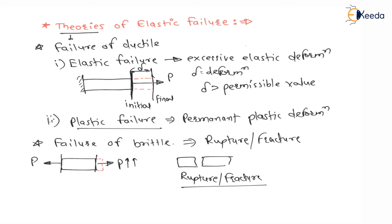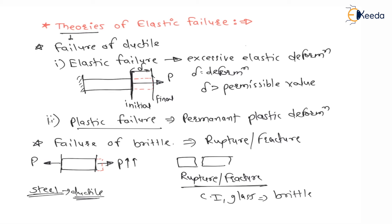For example, consider steel. As load is applied slowly, deformation goes on increasing and the component undergoes plastic deformation — this is ductile failure. Consider cast iron or glass: if load is applied, there is negligible deformation, and suddenly it breaks into pieces — this is rupture or fracture, as it is a brittle material.